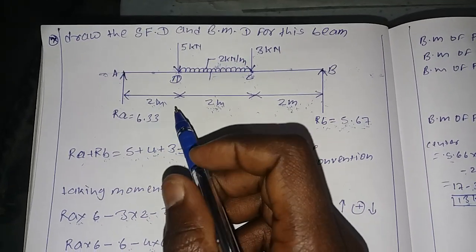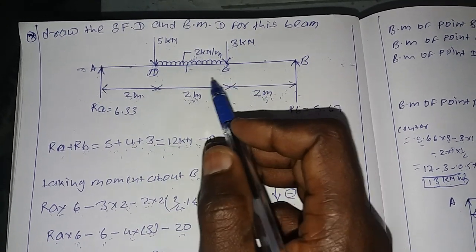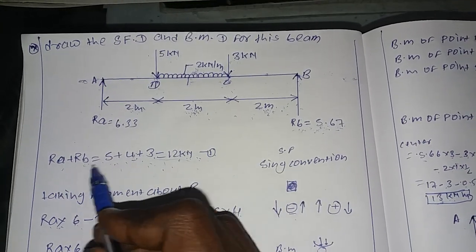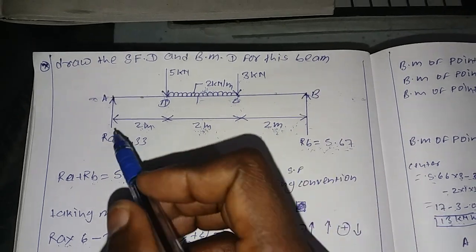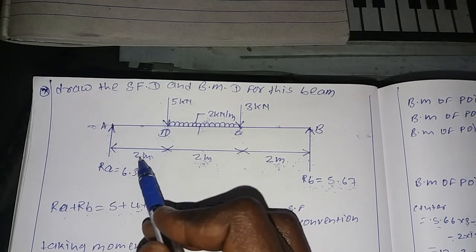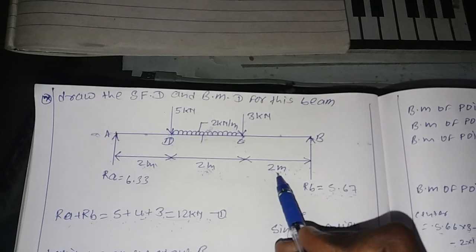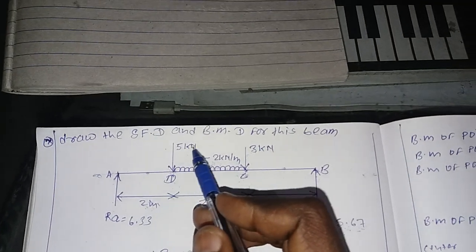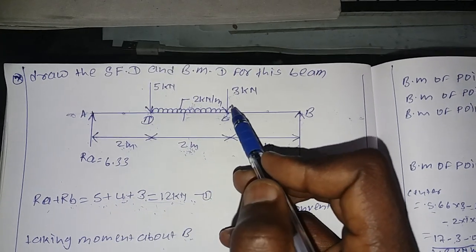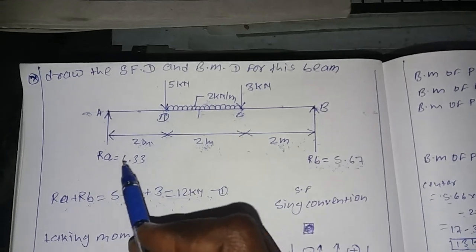Hello friends, today we discuss how to draw shear force and bending moment diagrams for a simply supported beam. Supports are provided at points A and B. The total distance is 6 meters: A to D is 2 meters, D to C is 2 meters, and C to B is 2 meters. At point D, a 5 kN point load acts, and a UDL of 2 kN/m acts between D and C. At point C, a 3 kN point load acts.